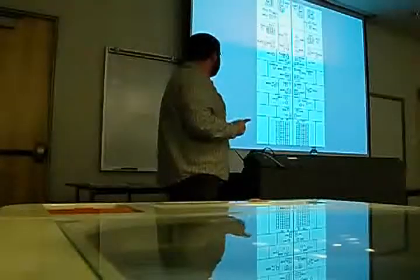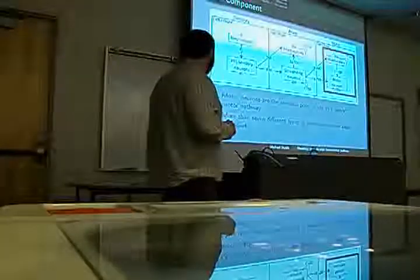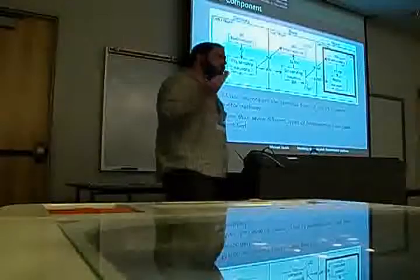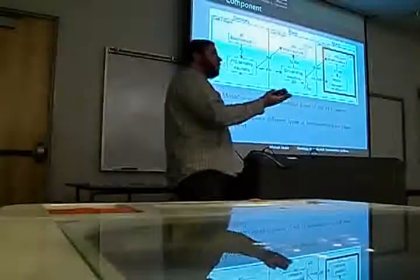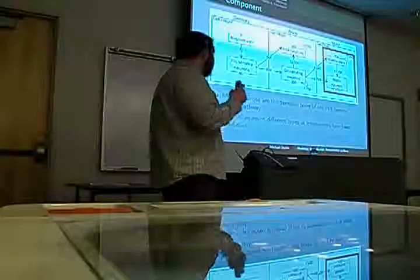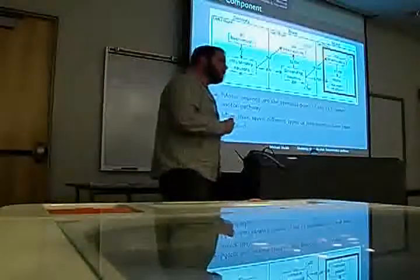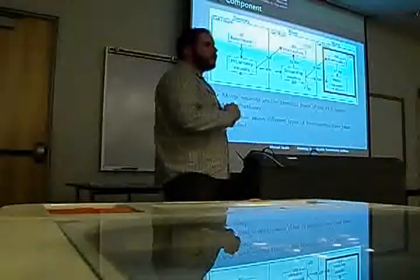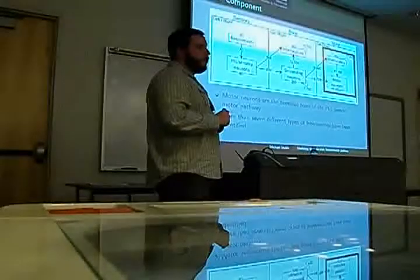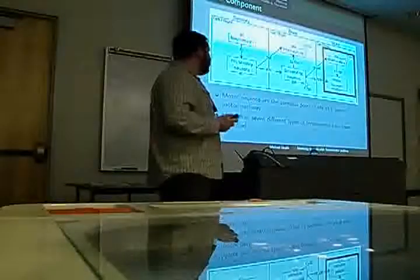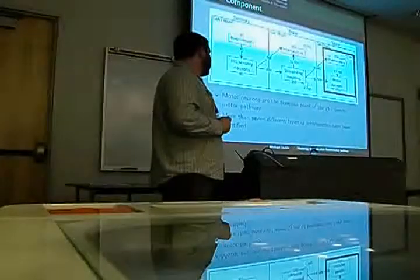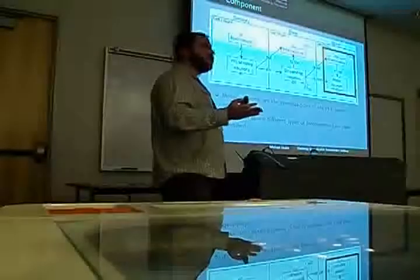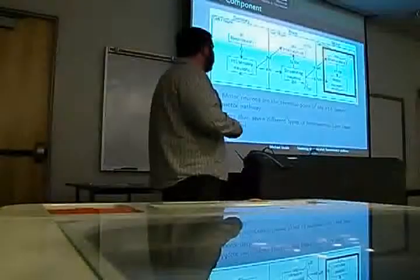Moving on to the motor component — the spine. The motor neurons are the end of the track. This whole system is a feed-forward system: it starts at the neuromasts, transfers to the brain, and ends in the motor neurons. To get there, there are usually some interneurons to go through, and there are several of those in the spine — over seven types identified, all accounted for in the model. The number of motor neurons is rather well understood: roughly 26 per segment of the spine.